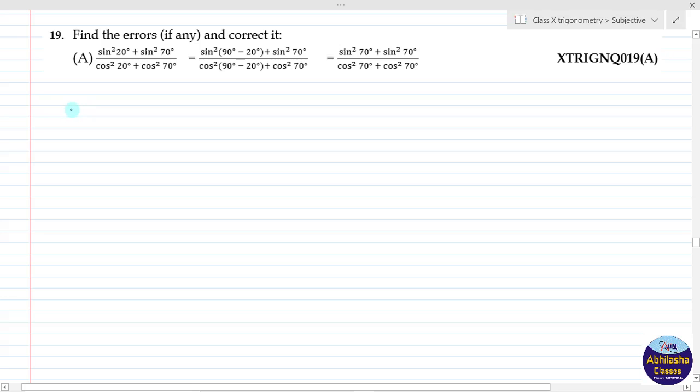So, the equation given is: sin squared 20 degrees plus sin squared 70 degrees, and in the denominator we have cos squared 20 degrees plus cos squared 70 degrees.